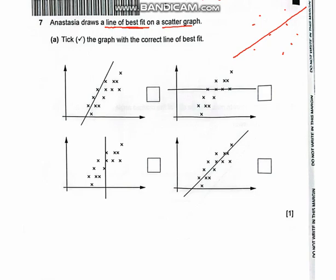So we have to find out the line of best fit. For the first one, if you see the line, it is just too steep, so it is not a line of best fit. For the second one, it is horizontal and crossing in the middle, but not half at the top and half at the bottom, so it is too horizontal. The third one is just straight vertical, so we will not take it as a line of best fit. But if you look at the last one, it is just passing exactly through the points, so this is the line of best fit.